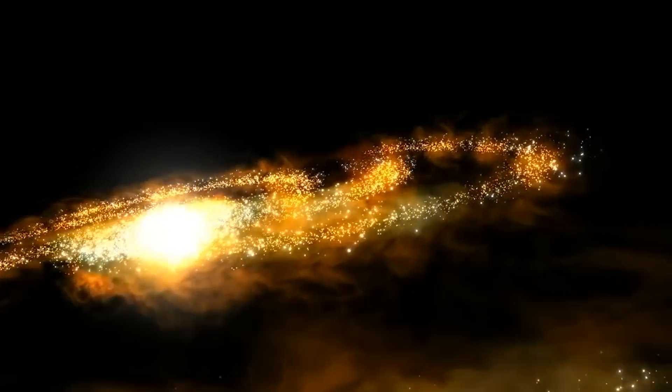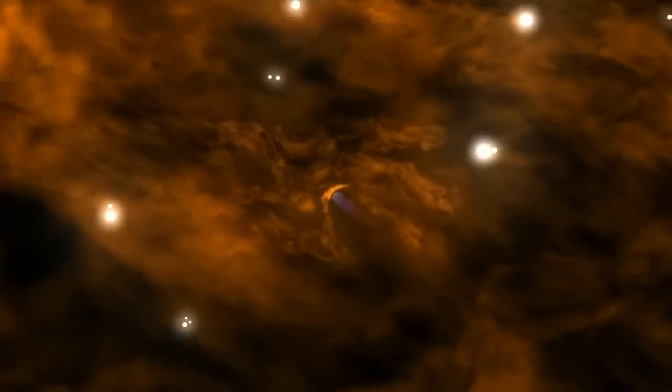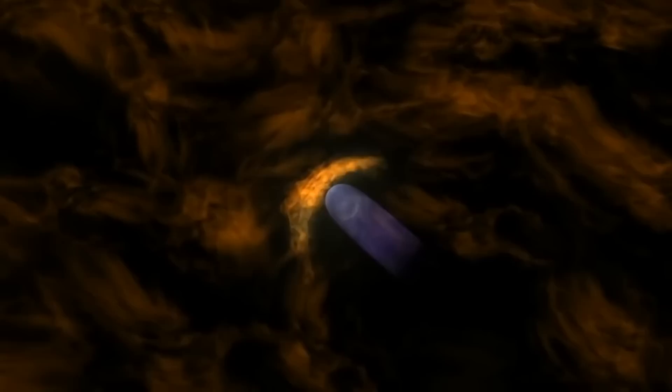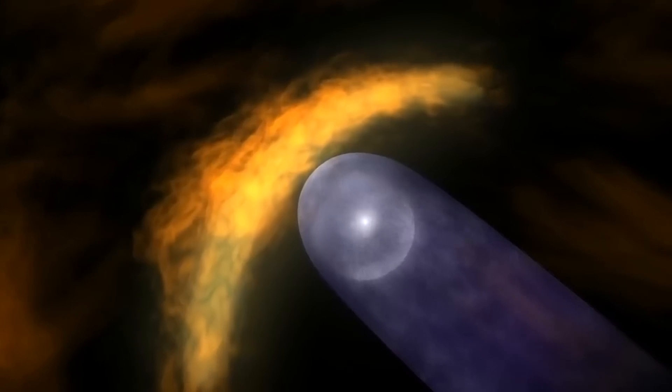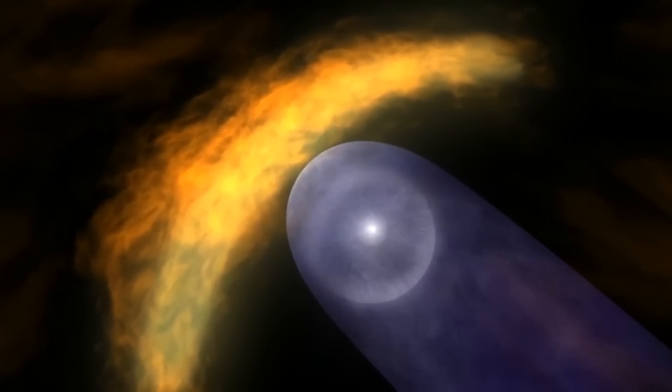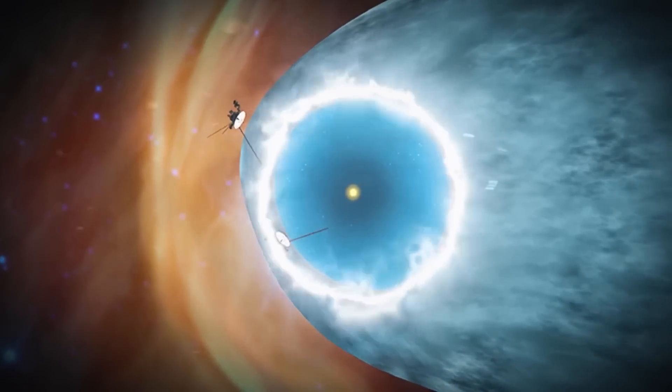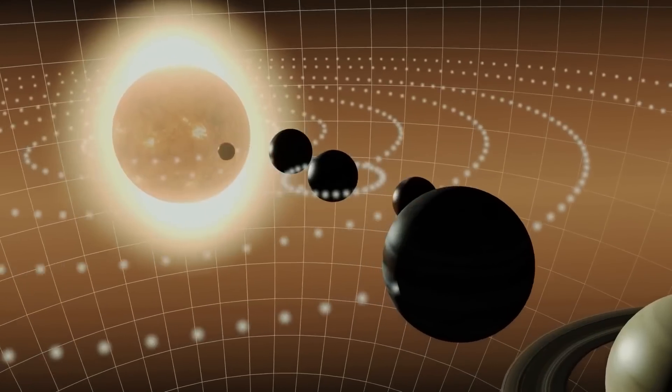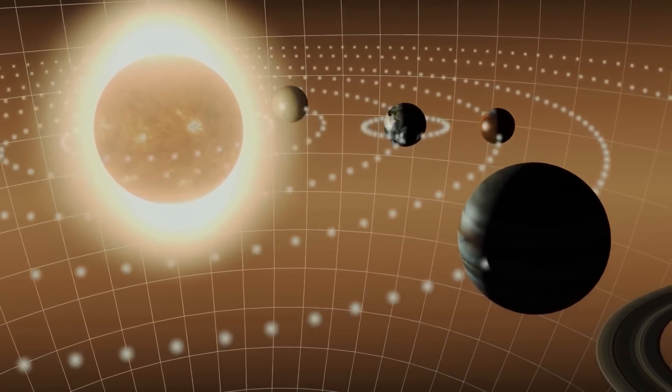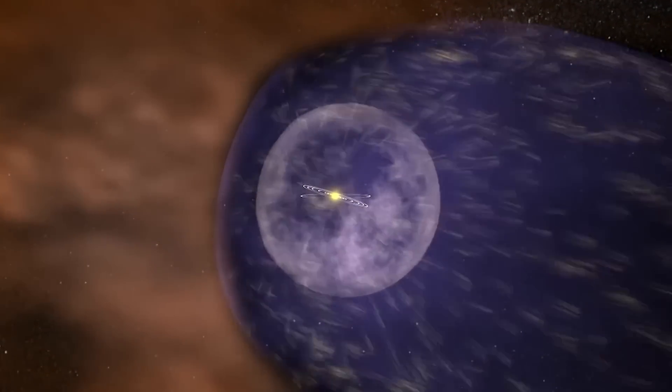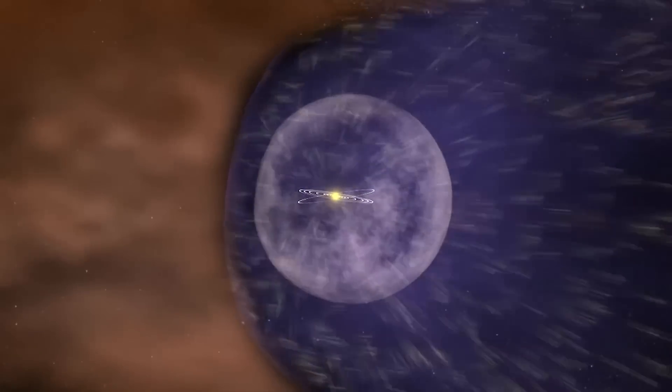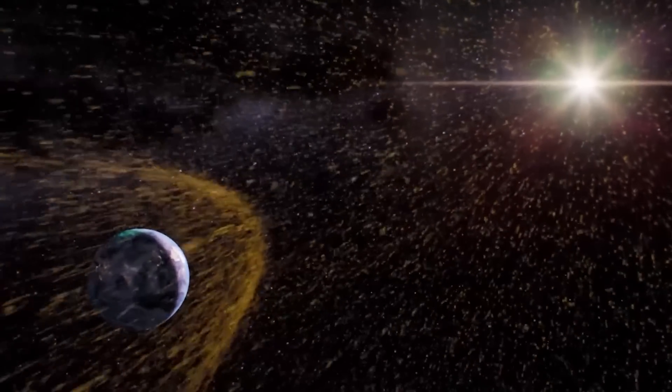Interstellar space is the void beyond the heliosphere, filled with much higher energy particles and a much greater intensity of cosmic rays. Our solar system is spinning through interstellar space with the sun holding the planets together, and the heliosphere acting as the protective field that shields the planets, including Earth, from the raw radioactive nature of interstellar space.